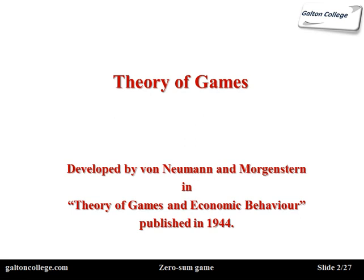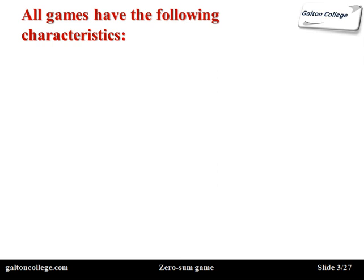So, let's first of all decide on what is a game — what are the characteristics of games. Well, there are a number of characteristics. First of all, when we have games, we have a number of strategies. If I am playing chess with you, I will have a number of strategies. I won't just have one strategy, because if I do, you'll beat me — you'll know what my strategy is, work out a counter strategy, and beat me. So generally speaking, I have a number of strategies. The football manager will also have a number of strategies used throughout the course of the game.